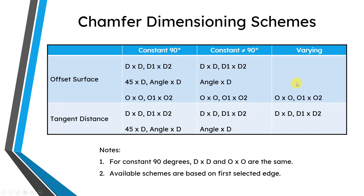If you are using the Tangent Distance creation method with a constant 90-degree angle, you have all the dimensioning schemes except the O options — same if you have a constant non-90-degree angle. If it's varying, your choices are D by D or D1 by D2 with the Tangent Distance method. When O by O and O1 by O2 first came out, I remember being confused about the use case, but it really seems that it is to handle edges where the angle between the surfaces is varying. Note that at a constant 90-degree angle, O by O is the same as D by D, and O1 by O2 is the same as D1 by D2.